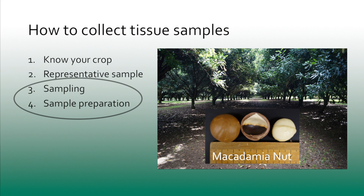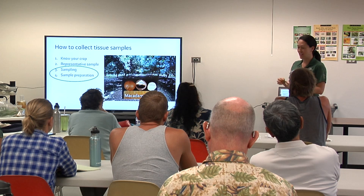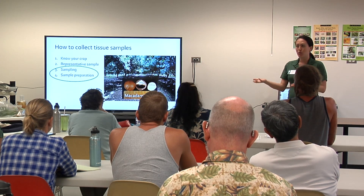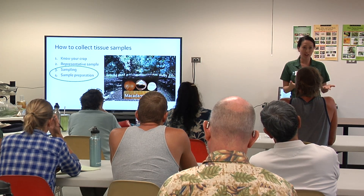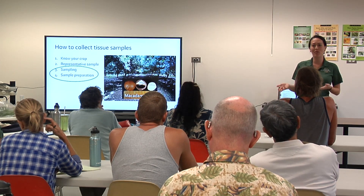The two most important factors are sampling and sample preparation — this is where you can go wrong. If you do these steps incorrectly, it can lead to inaccurate results, and you'll either apply too much or too little fertilizer. Making sure that you're using correct sampling methodology and correct sample preparation and submission are really critical to getting accurate results. Otherwise, you're just throwing money and time away.